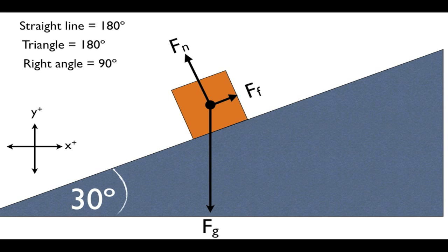First, that a straight line is always 180 degrees. Second, that a triangle has a total of 180 degrees. And three, a right angle is just 90 degrees.